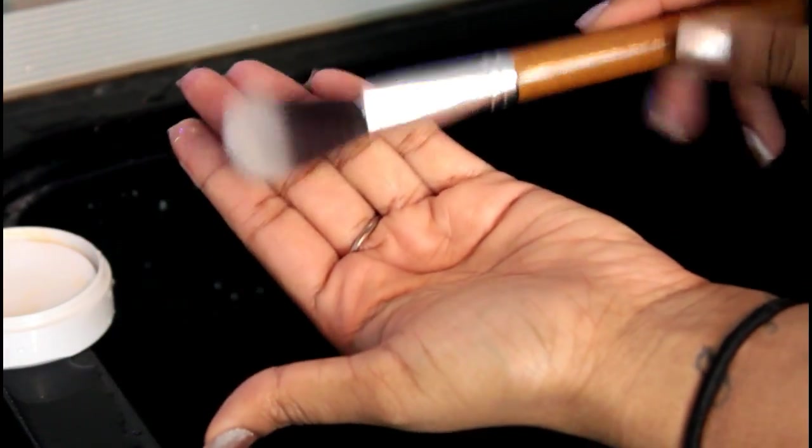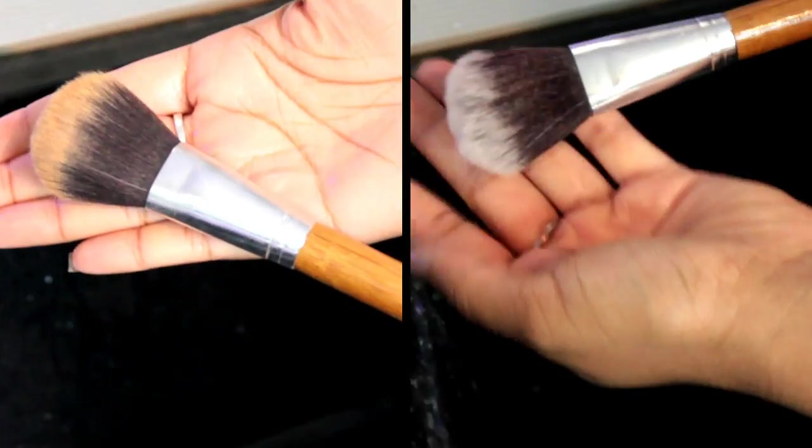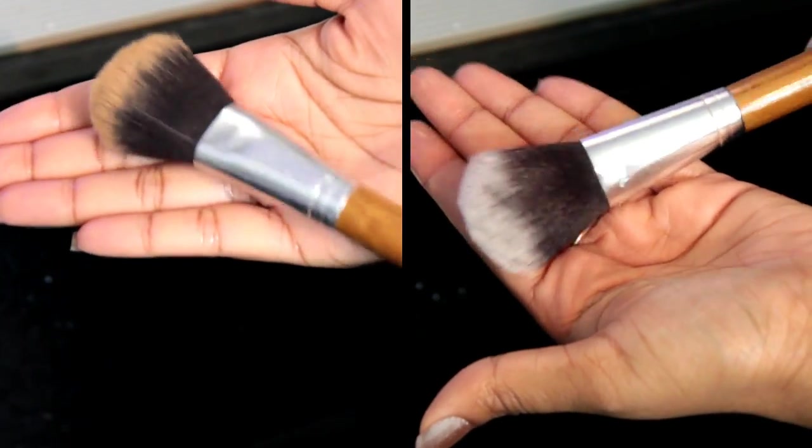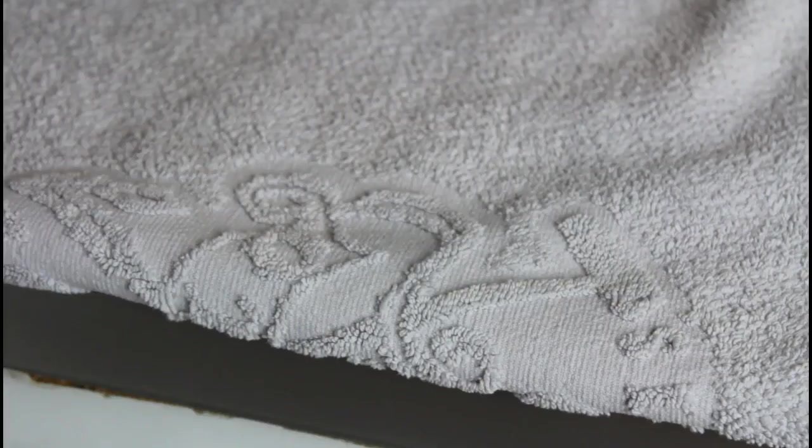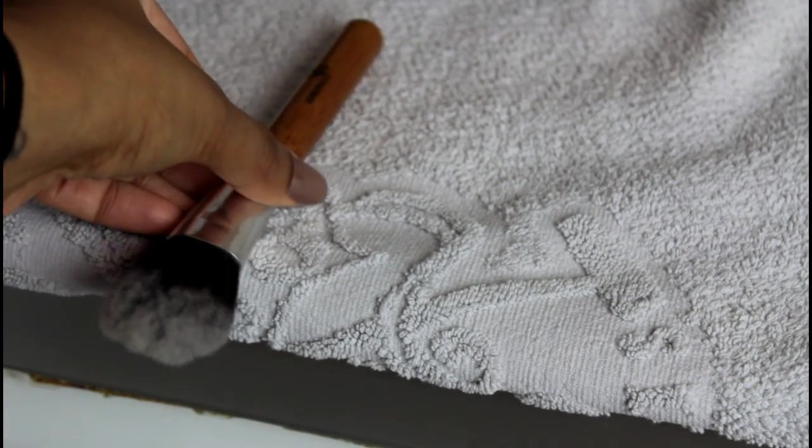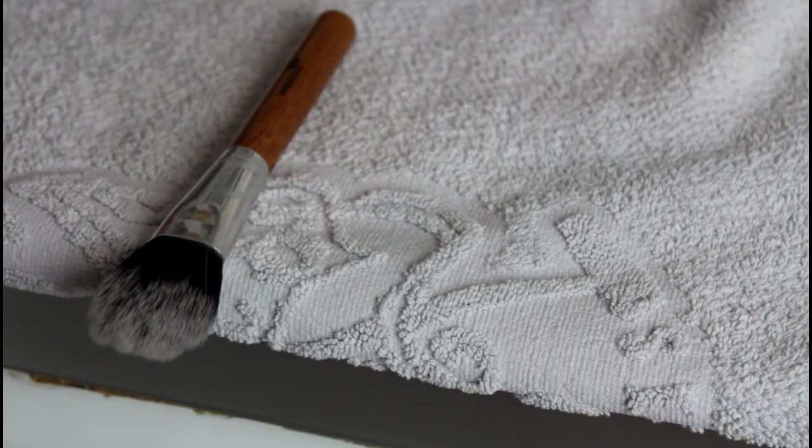And there you go, that's a clean brush for you. I just really love this beauty blender soap, it cleans your brush so well. I did use a towel to just dry off the brush, and then I just put it on a towel, kind of on an edge, so that it can dry thoroughly on both sides of the brush.